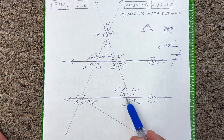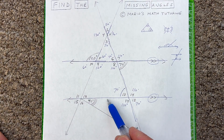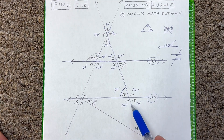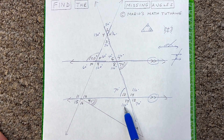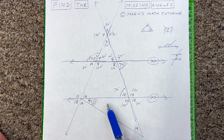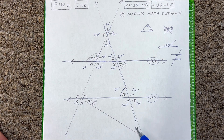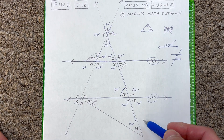Now notice we've got another triangle here. All the angles in a triangle add up to 180. So if this is 40 and this is 110, that's 150 — and 180 minus 150 is 30 degrees. So angle 19 is 30 degrees.